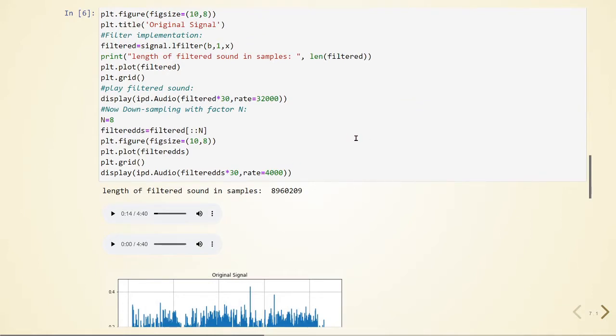We will do the downsampling of the filtered version. And this is what we are doing here. We are downsampling with the factor N equals 8. We see that here we are playing back with the sampling rate of 32 kHz.